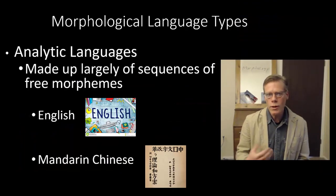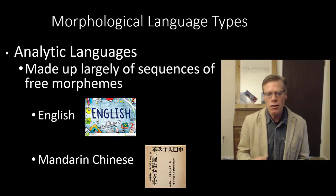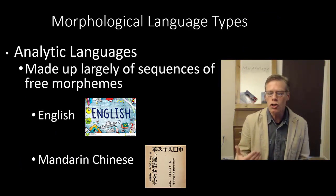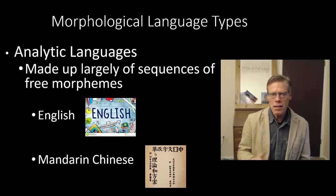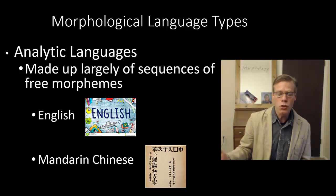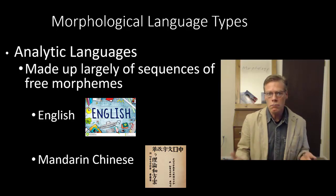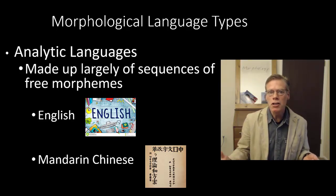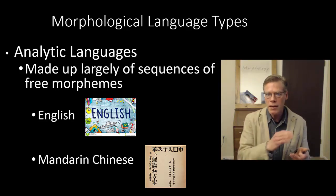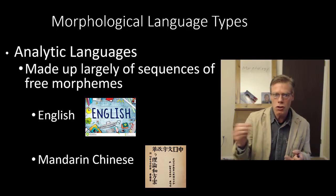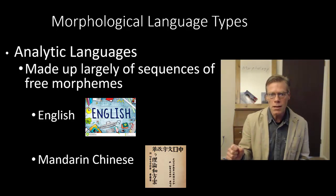We'll start with analytic languages. These are languages that are made up largely of sequences of free morphemes. Relative to other languages, most words are undecomposable — they're atomic. We can't separate them into smaller morphemes.